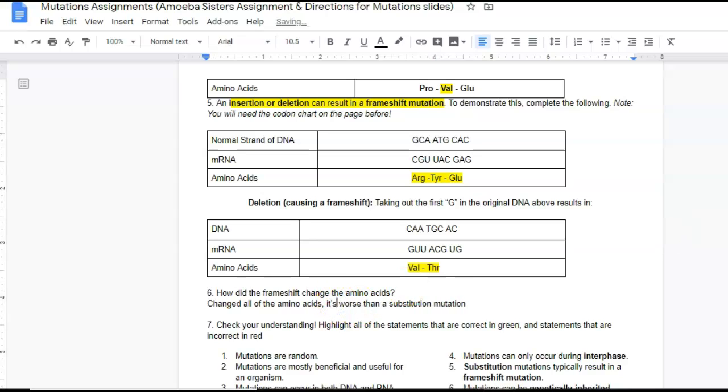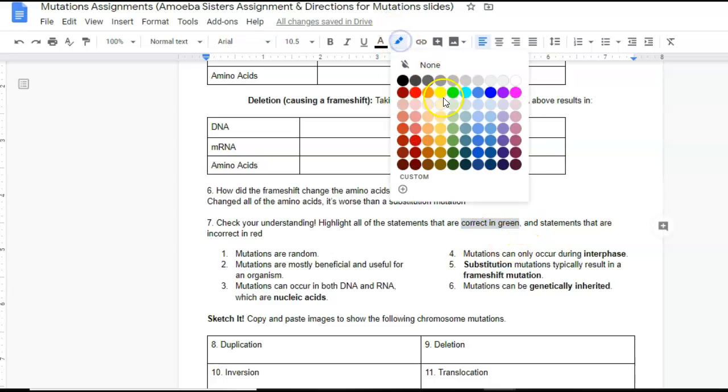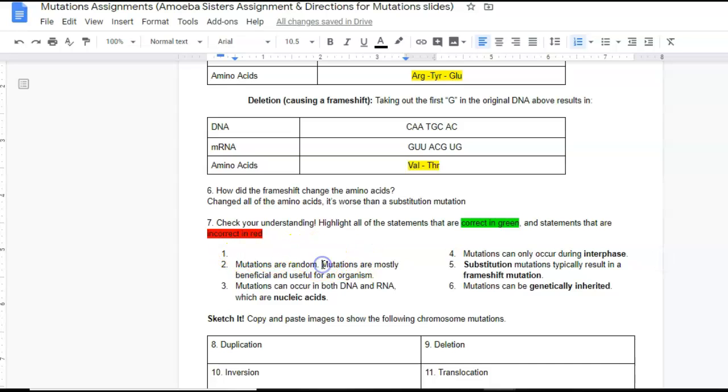So if you have trouble with this part, fix your assignment and turn it back in. And this last part down here, you just had to highlight everything that was correct in green and statements that were incorrect in red. So for example, mutations are random—that's true. So that would be highlighted in green. And you can figure out what's true and false watching the amoeba sisters video. So hopefully this helps you go over the mutations assignment. You can fix it and then turn it in.